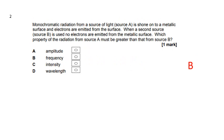Monochromatic radiation from a source is shone onto a metallic surface and electrons are emitted. When a second source is used, no electrons are emitted. Which property of the radiation from source A must be greater? Well, if it's causing emission, then its photons have got more energy, so they have a higher frequency. The answer is B.